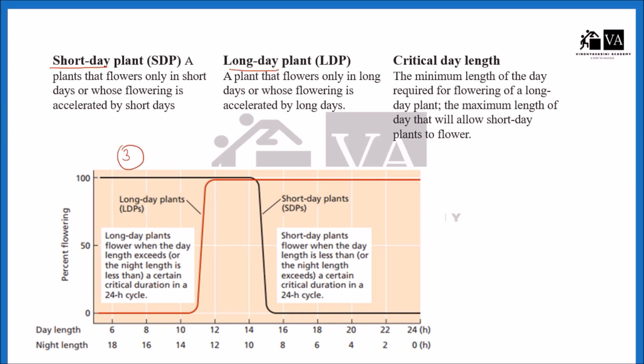So what is a short day plant? Short day plants flower when the day length is less than a certain critical duration, and they require a long period of darkness for flowering. Examples of short day plants are coffee, tobacco, and trisentum.